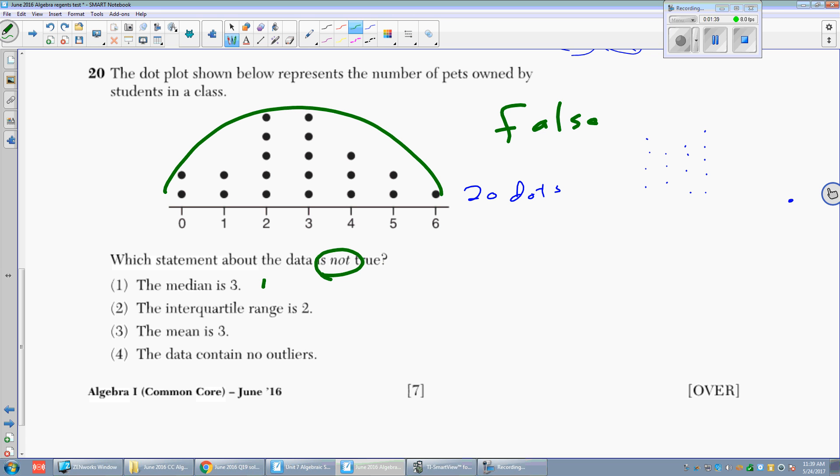So the median. The median is the middle number. So if there are 20 dots. One, two, three, four, five, six, seven, eight, nine, ten. And then there are ten on the other side. So that is the median. The median is three. True.